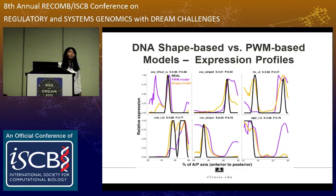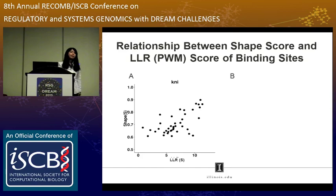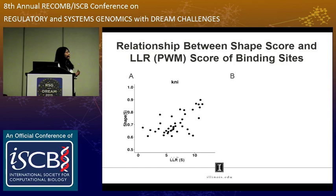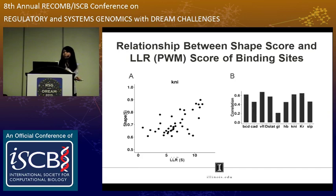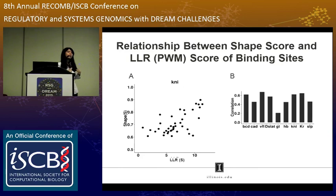You might ask whether DNA shape scores are just a transformation of sequence and intrinsically the same. We checked the relationship between the shape score and the PWM log-odds ratio (LOR) score. For KNI (Knirps), the correlation is only 0.5. Looking at all nine TFs, most don't have high correlation — Giant is around 0.2, and the average across all is 0.5. So we are confident the shape score is not redundant to the PWM score and provides additional information useful for predicting gene expression.